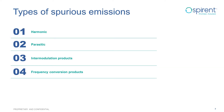There are four different types of spurious emissions. The first is harmonics, which are whole multiples of the center frequency of the emission. The second type is parasitic emissions, which are independent of the carrier frequency of the transmission. The third is intermodulation products resulting from the circuitry that generates the carrier or the harmonics. And the fourth is any frequency conversion products which exclude harmonic emissions generated to produce the carrier.